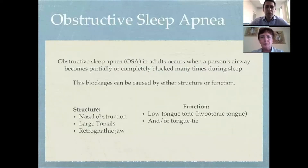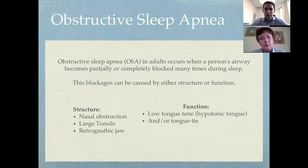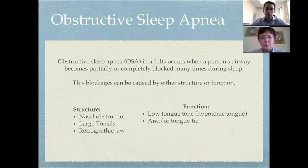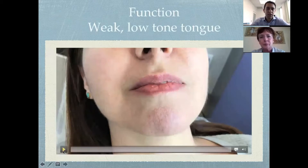As you know, obstructive sleep apnea is a process in which patients have a partial or complete blockage of their airway. These blockages can be caused either by structure or by function. By structure, we have things like nasal obstruction due to septal deviations or turbinate hypertrophy, blockages in the oropharynx at the level of the tonsils, or even problems with the maxillofacial skeleton as with retrognathic or micrognathic jaw. But also these problems can present in terms of poor function, and what we're going to look at specifically today is a low-tone tongue.